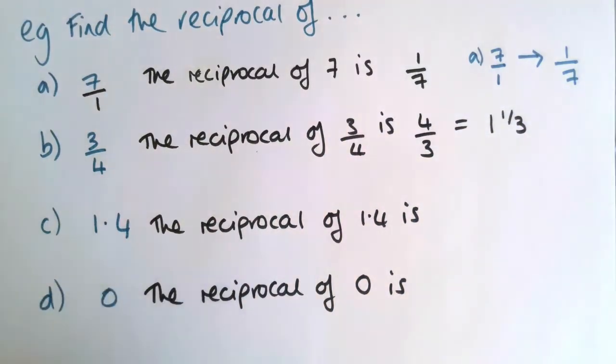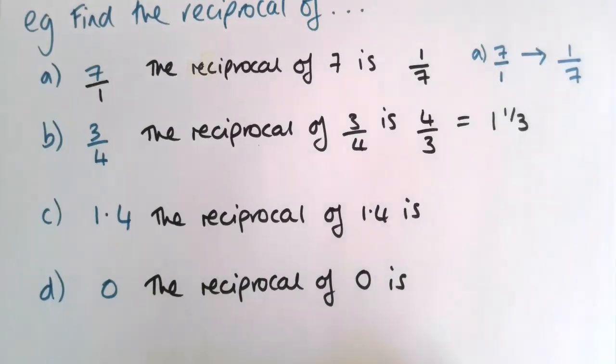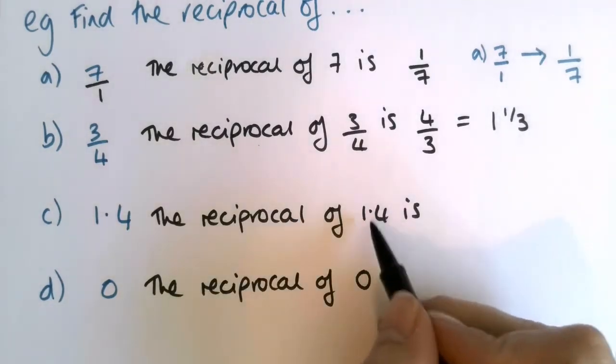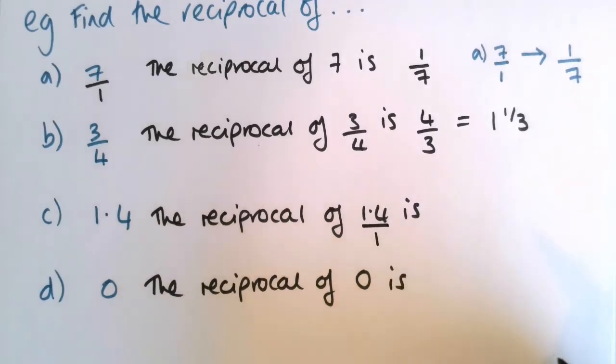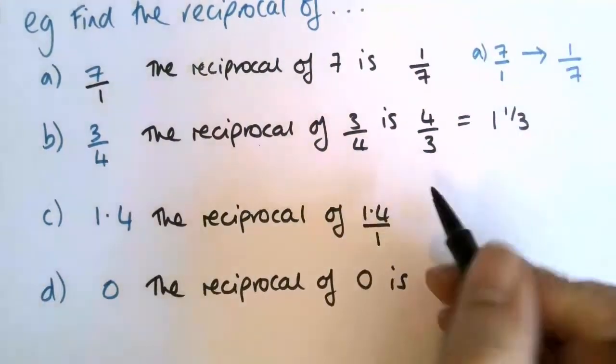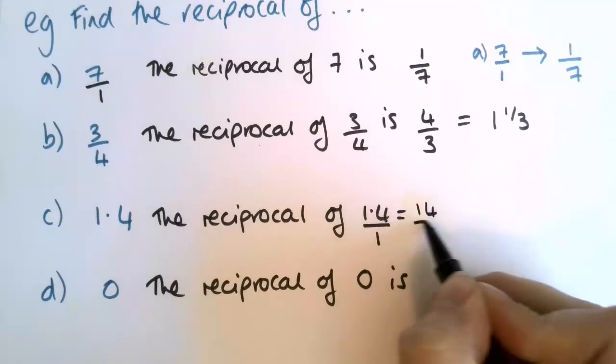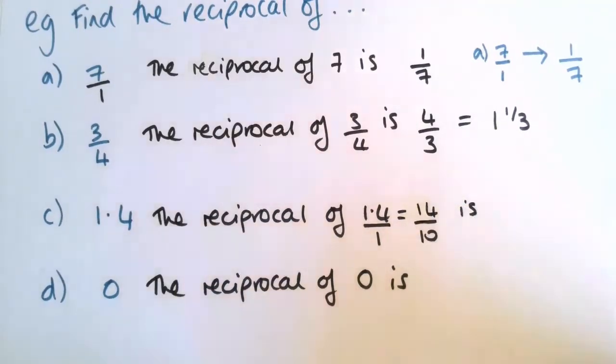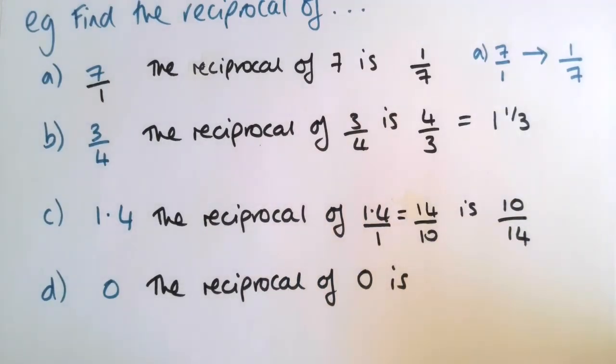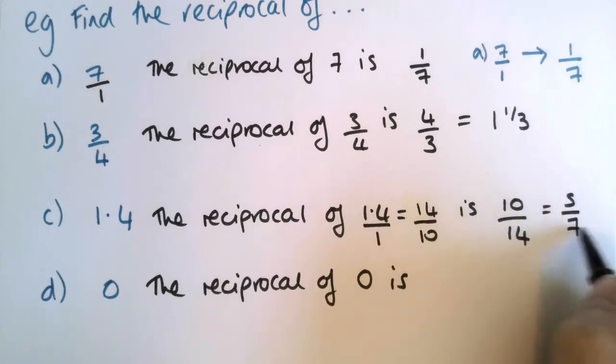1.4. So to do it, we're going to have to change that into a fraction. So 1.4 we can write as 1.4 over 1, which is 14 over 10. I wish I'd left myself room. Let me see. 1.4 over 1, I would rewrite that as 14 over 10. And then I can change that by turning it upside down to 10 over 14, which can simplify down to 5 sevenths. Hopefully that was clear enough.